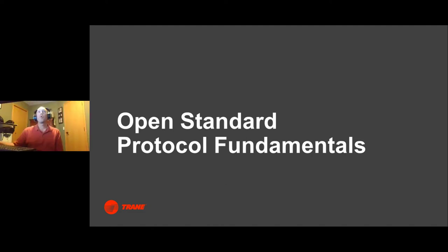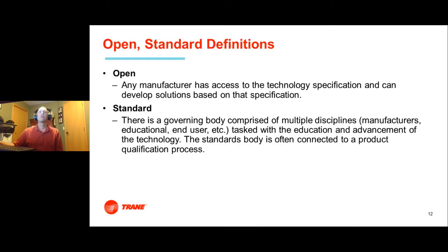Andrew just went over what an open system is and how we can use it to fulfill customer needs. He also talked about how an open system is made up of three different categories: open distribution, open tools, and open protocols. I'm going to do a little deeper dive on open protocols.